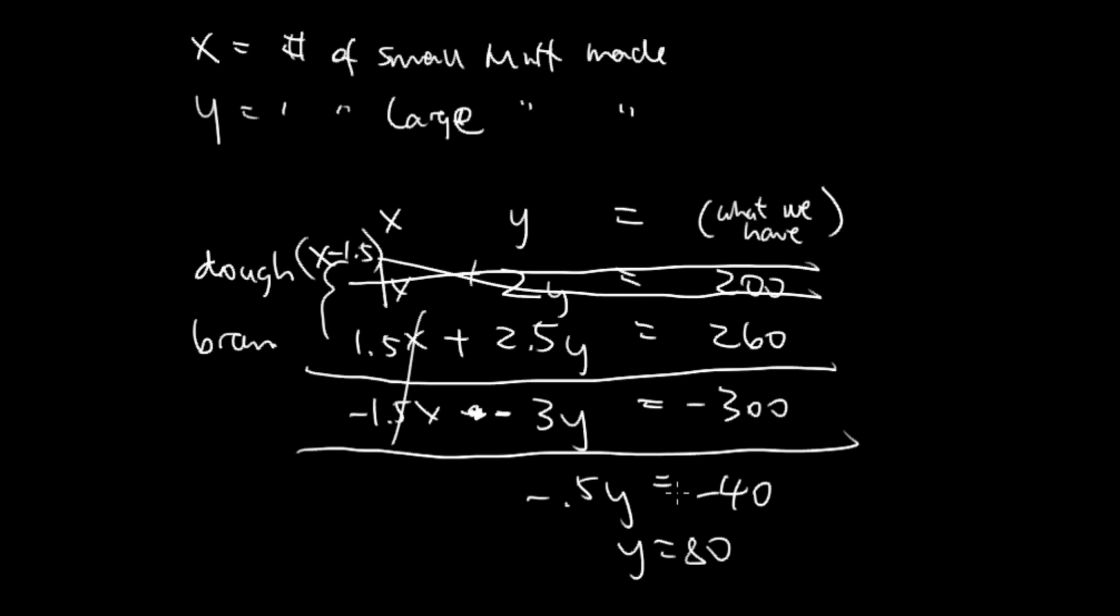So y equals 80. I'm going to plug that back into the first equation. We have x plus 2 times 80 equals 200. This is 160, subtract 160 over, x is 40.